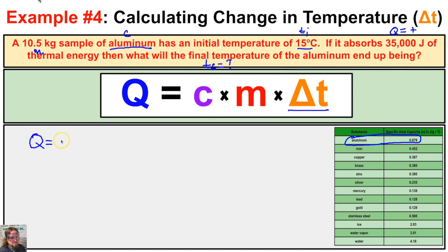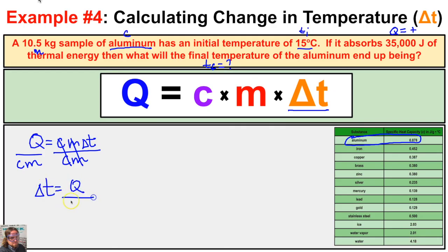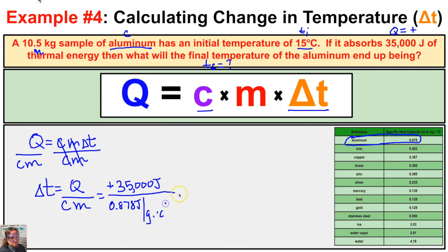Using Q equals C times M times delta T and dividing both sides by C and M, delta T equals Q over C times M. Q is positive 35,000 joules since it's absorbing energy. The specific heat capacity of aluminum is 0.878 joules per gram degree Celsius. The mass is 10.5 kilograms, which we convert to 10,500 grams.